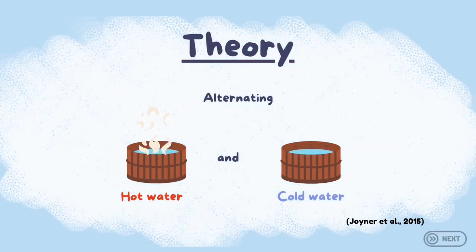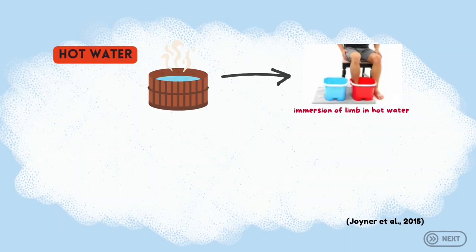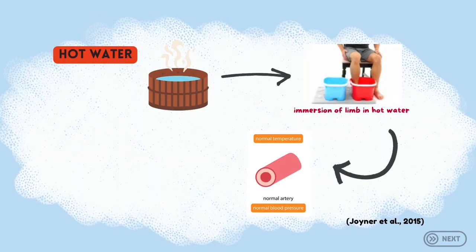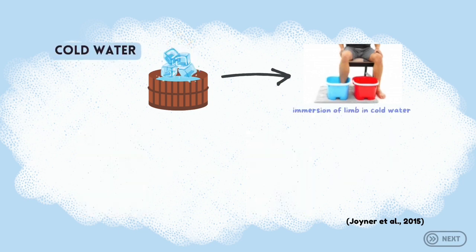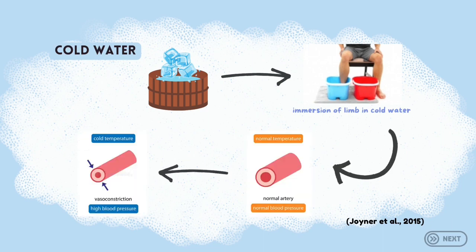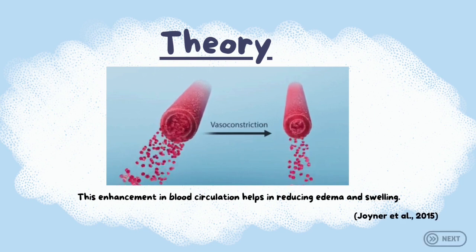So, what is the underlying principle of contrast bath in physical therapy by alternating hot and cold water? The immersion of a limb in hot water causes the blood vessels to widen — a process known as vasodilation. Vasodilation enhances blood flow to areas of the body that lack oxygen or nutrients. In contrast, the immersion of a limb in cold water causes the blood vessels to narrow — vasoconstriction — which aids in rapidly closing the body's blood vessels. This enhancement in blood circulation helps in reducing edema as well as swelling.